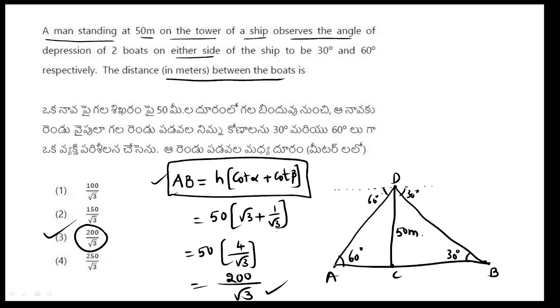Distance between the two points, when the tower is in the middle, the formula is h into cot alpha plus cot beta. When it's on the same side, you can apply this trick.